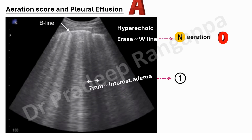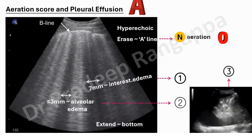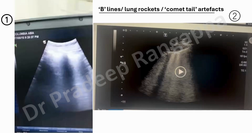Normal aeration — an A-pattern — scores zero. B-lines with 7mm spacing (interstitial edema, not severe) score one. More diffuse B-lines with separation less than 3mm, suggestive of alveolar edema, score two. Consolidation with a shred sign with or without air bronchogram scores three. You're essentially stratifying lung aeration, and you also need to look for pleural effusion.